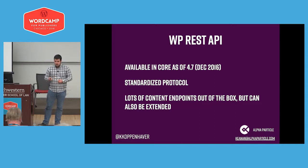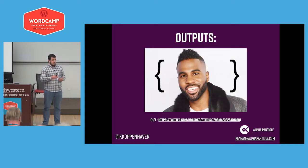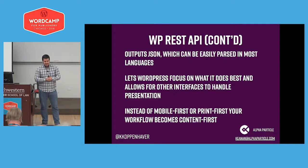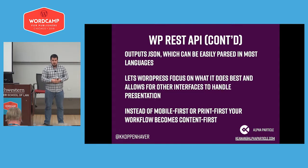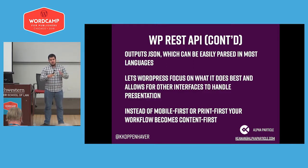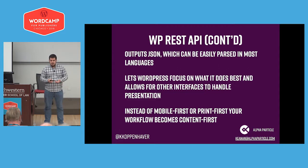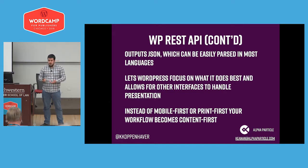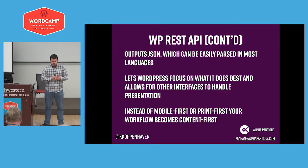The REST API standardizes the format and return of data, and it outputs JSON, which can be easily parsed by most languages — JavaScript, Python — they understand that format pretty natively. Using the REST API to integrate with something else, rather than trying to change post output and content output, lets WordPress focus on what it does best: content management. The end result is that instead of thinking mobile-first or print-first, as we get more interfaces that could be first-class citizens, you can think of it as content-first — all your content lives in WordPress and different versions of it can live elsewhere, but it all comes back to WordPress as the hub.